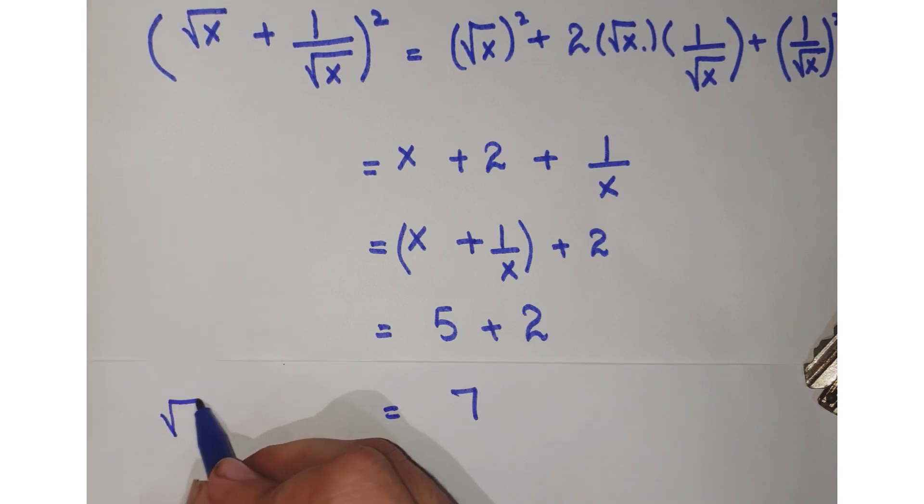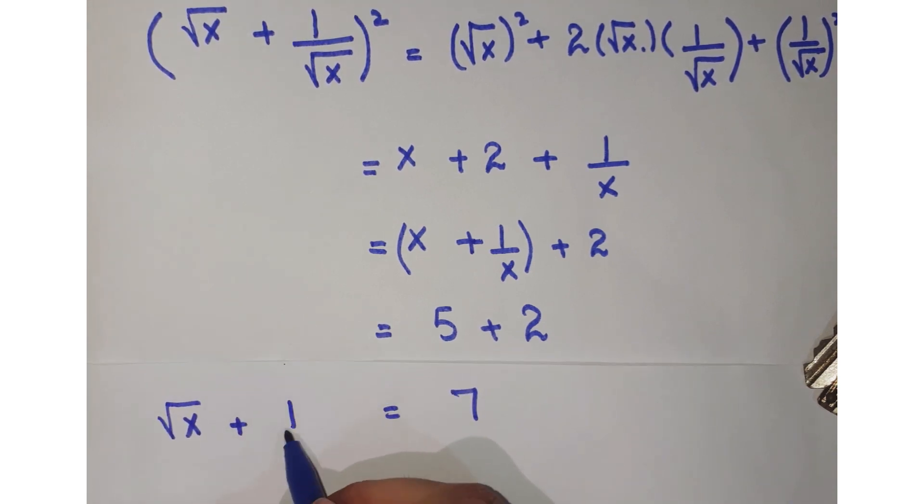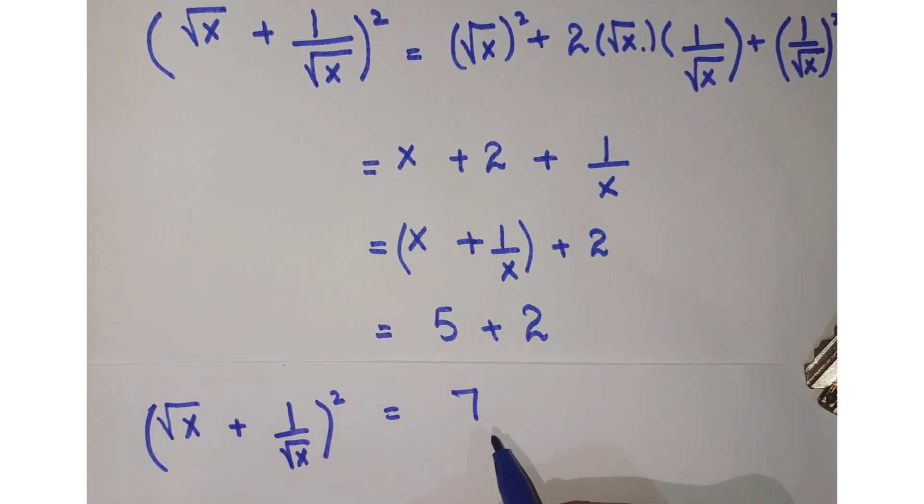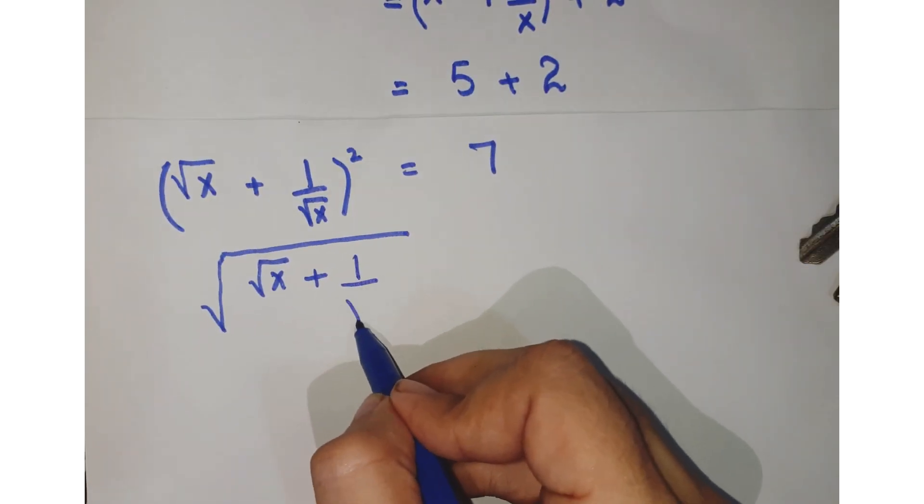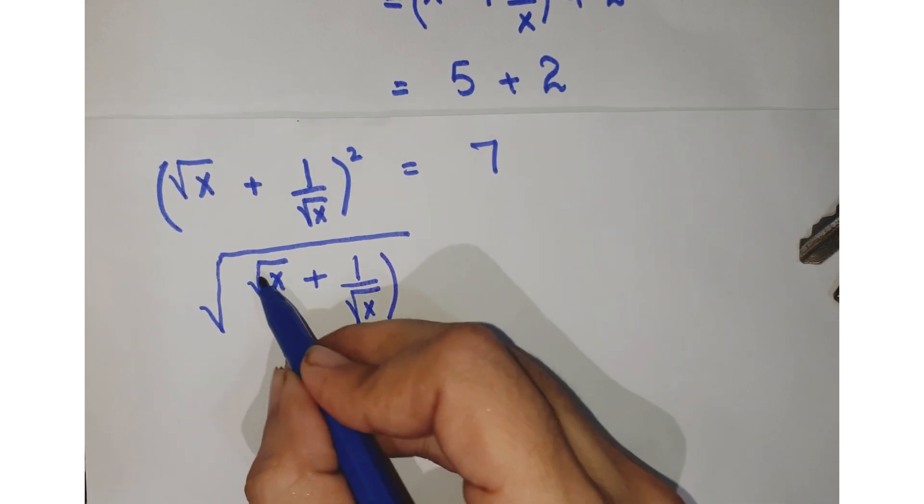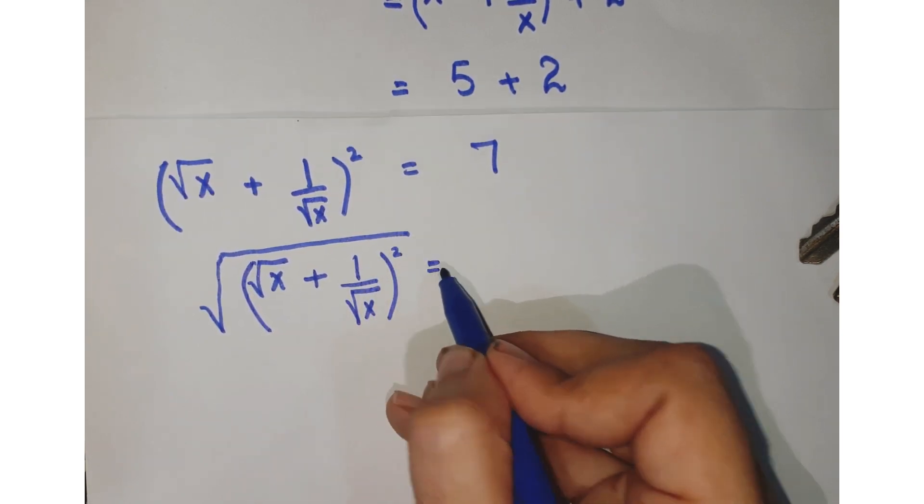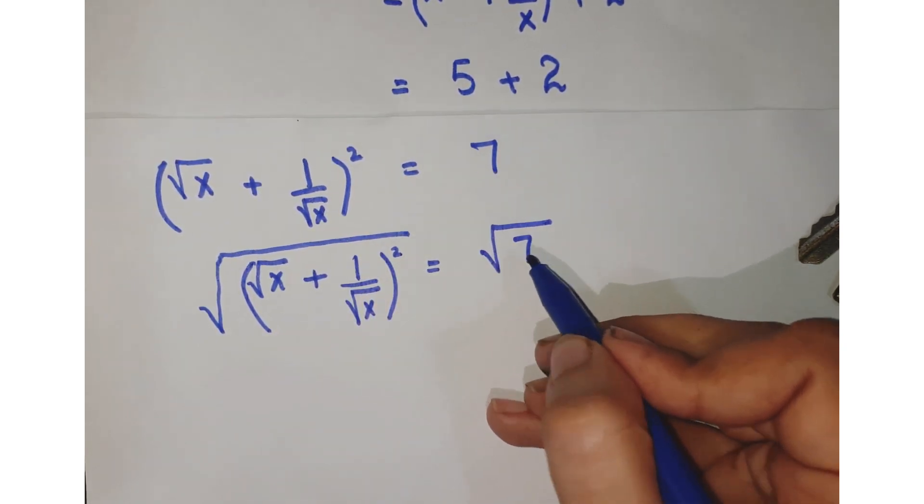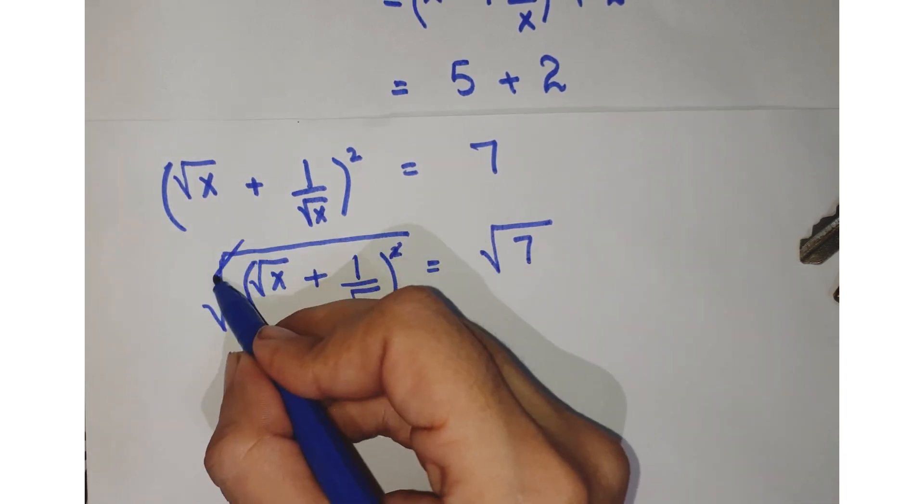So we have square root x plus 1 upon square root x whole square equals 7. We take square root on both sides, so we get this and here this is square root 7. This 2 and this square root is cancelled.